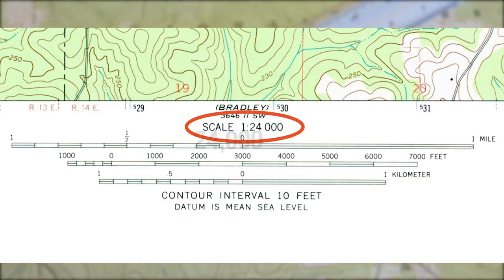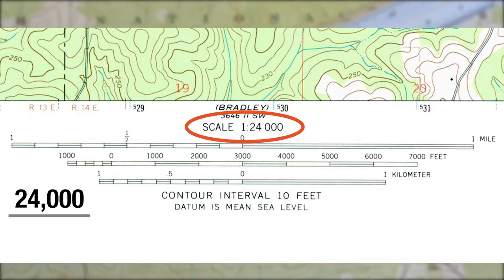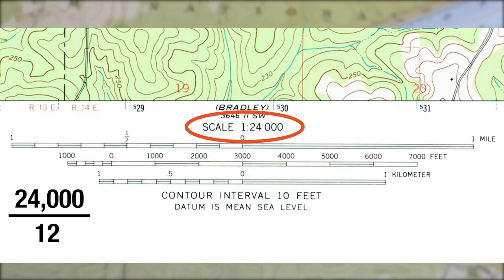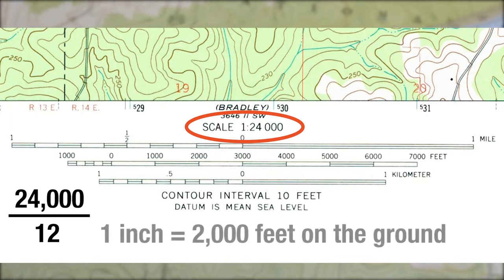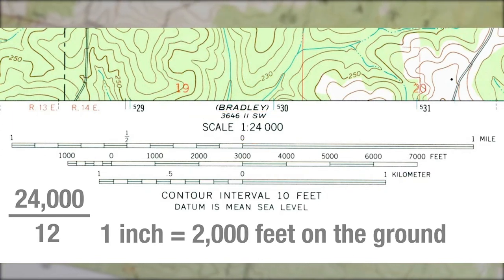To determine feet, divide 24,000 by 12 inches per foot. So in this case, 1 inch on the map is equal to 2,000 feet on the ground.